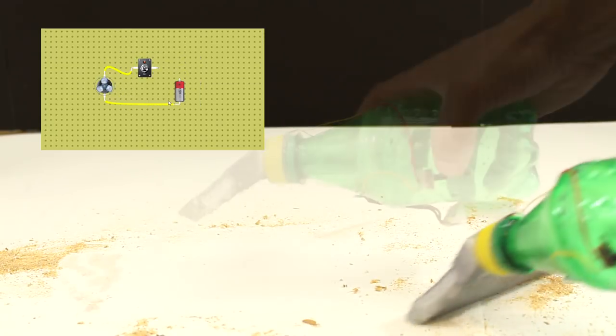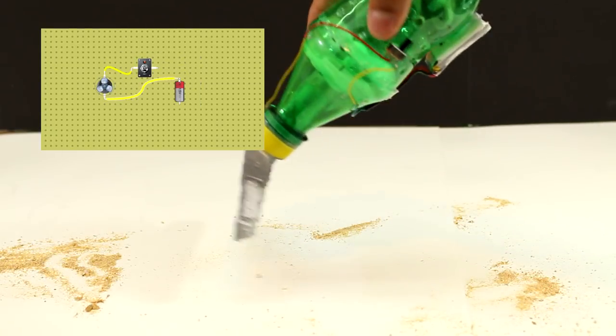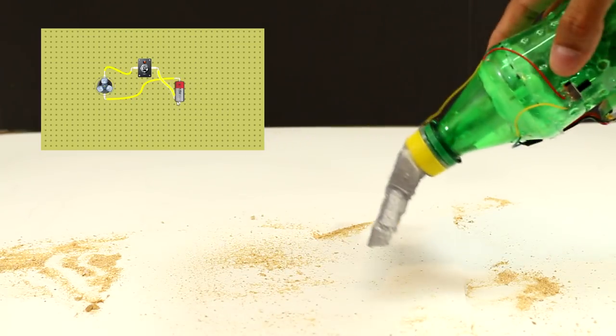To empty the vacuum, all we have to do is reverse the wires that plug into the battery. This will instead blow the dirt out of the vacuum to empty it.